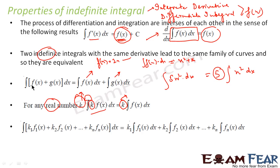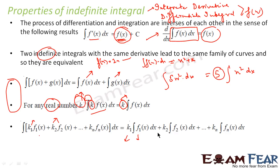The next property is the merge of the previous two. If you have constants with multiple functions — k₁f₁ + k₂f₂ + … + kₙfₙ — you can split the integral so that each constant is paired with its respective function. This is simply the combination of the sum rule and the constant factor rule.